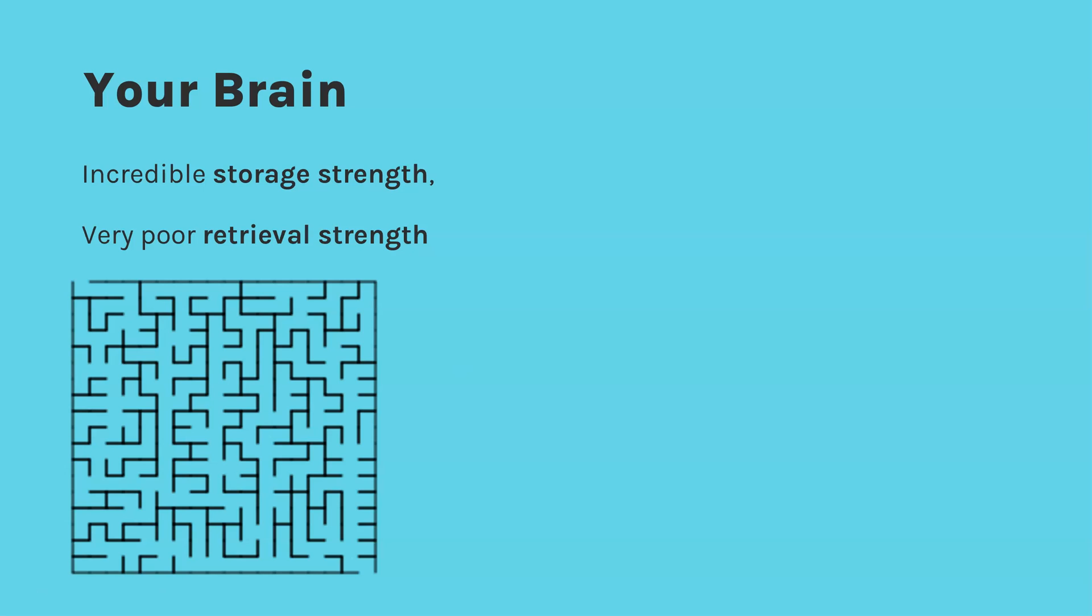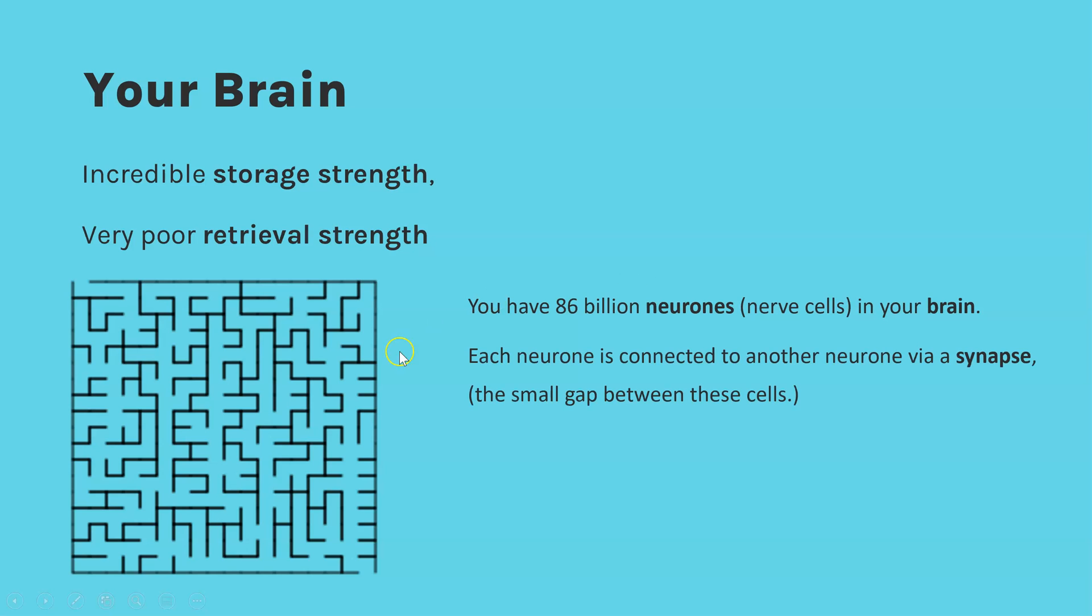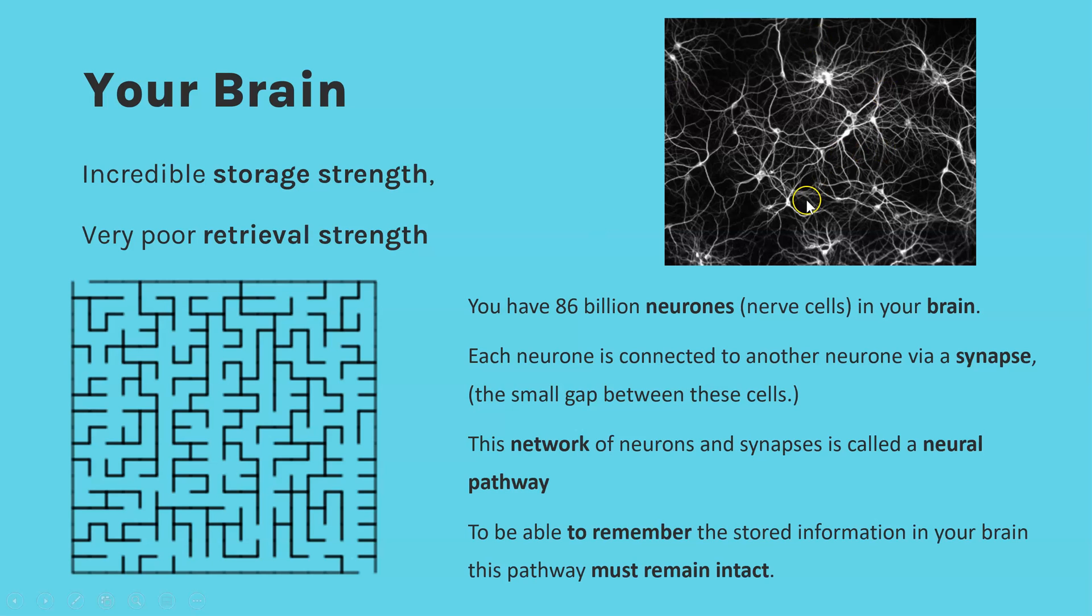The why you should use concept maps is linked to how your brain works. Our brains have an incredible ability to store information but are really not very good at locating that information, and that's what we mean by poor retrieval strength. Our brains can store so much information because there are about 86 billion neurons in our brain and each of those neurons is connected to another one via a synapse. When those all connect together we get these neural pathways and that is what creates these memories, these connections between all of these neurons which is storing information.